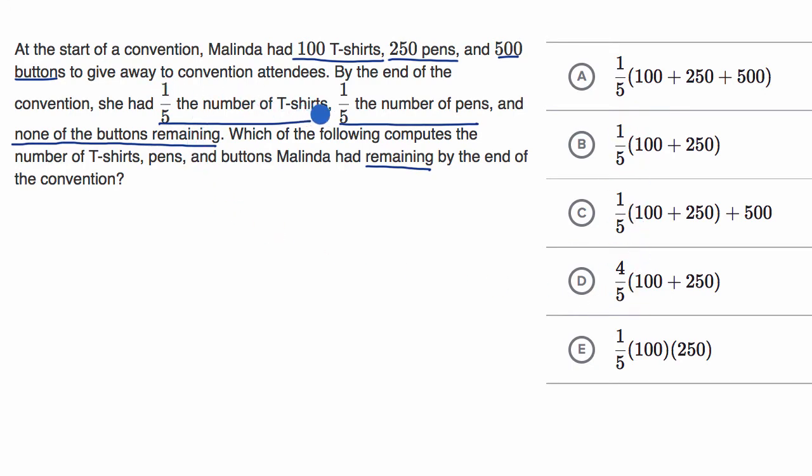So if we just try to generate our own expression, even before looking at these choices, we know that she is left with one-fifth of the original number of T-shirts, and she originally had 100 T-shirts. So how many T-shirts is she left with now? She's left with one-fifth times 100.